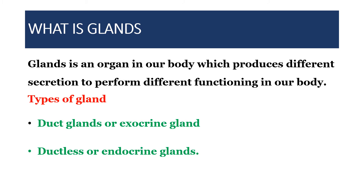A gland is an organ in our body that produces different secretions to perform different functions. There are two types of glands: exocrine glands, also called duct glands, and endocrine glands, also called ductless glands. Exocrine means there is a tube or duct present, while endocrine means ductless.